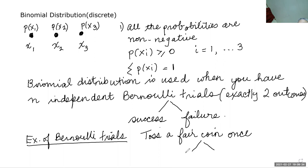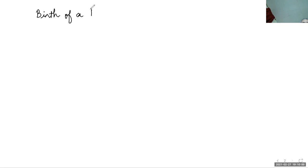Then your outcome possibilities are heads or tails. There are no other possibilities — the only choices are heads and tails. Such a trial is a Bernoulli trial. Another example of a Bernoulli trial would be the birth of a baby. There are exactly two possibilities for outcomes: the baby is either male or female. That's also a Bernoulli trial.